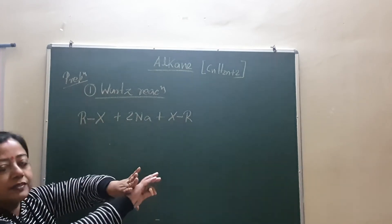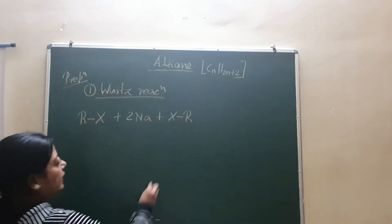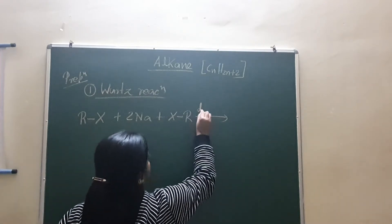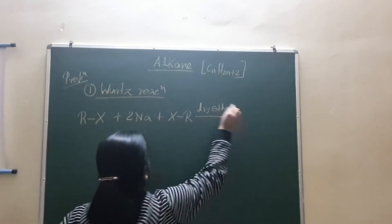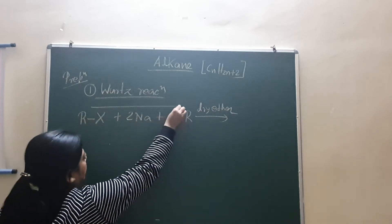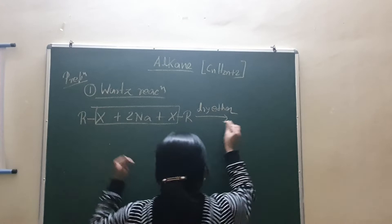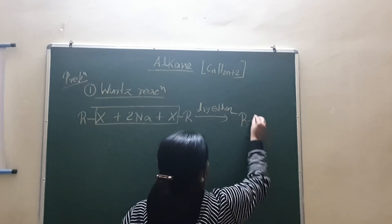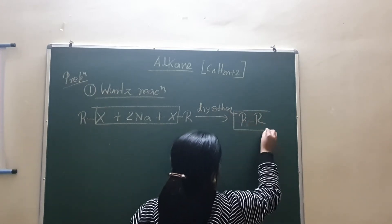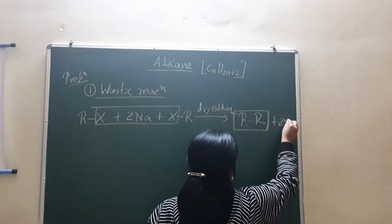See, alkyl halide R-X, it is treated with the metallic sodium and we take another molecule of the alkyl halide in dry ether medium. What happened? Now this NaX will be removed and we just combine these two R groups. So we get the higher alkane plus 2NaX.